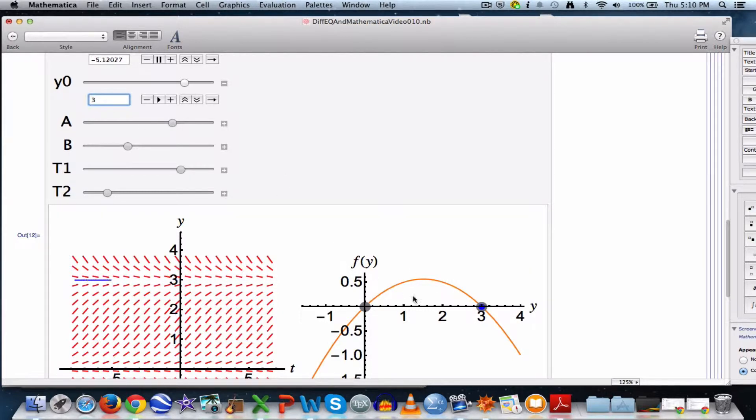That equilibrium point is what's called a sink. We saw that if y 0 was 2 or anything between 0 and 3, not equal to 0 or 3, that the blue dot is going to move to the right and toward y equals 3 as time goes by. If I pick y 0 to be 4, for example, now watch it. Now the blue dot is moving to the left as time increases corresponding to the solution curve that passes through the y axis at y equals 4, decreasing toward the equilibrium solution at y equals 3.